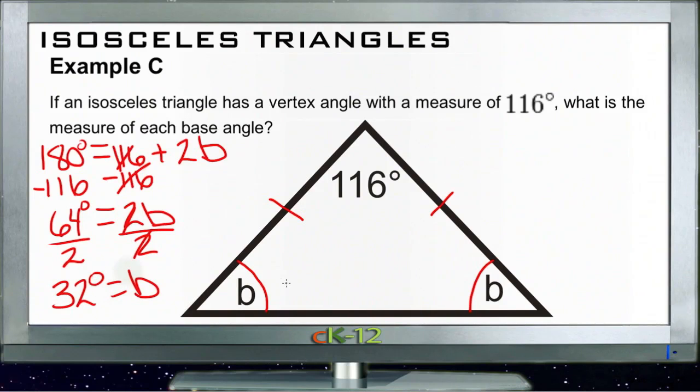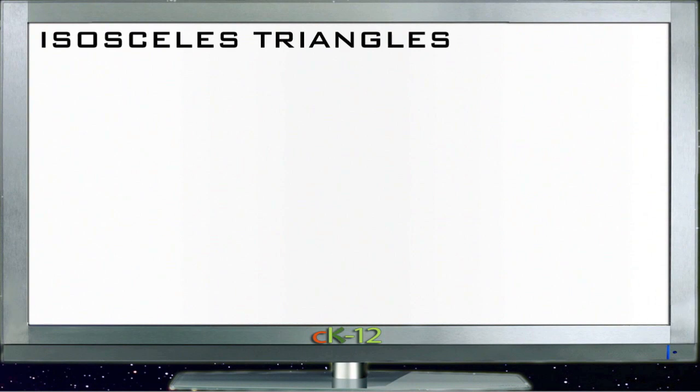So each of these angles down here end up being 32 degrees, and 32 plus 32 plus 116 is 180 total. So there we go.